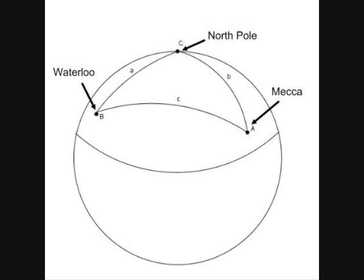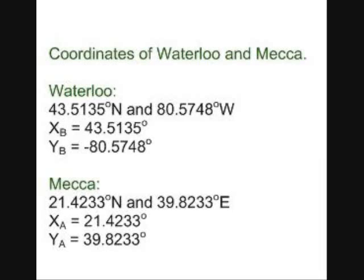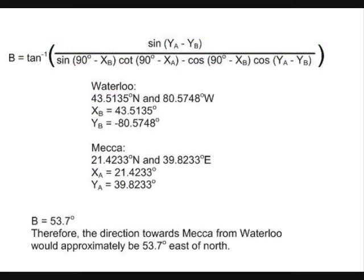Here are the coordinates of Waterloo and Mecca. By substituting these values in, we can determine that B is equal to 53.7 degrees. Therefore, the direction from Waterloo to Mecca would be approximately 53.7 degrees east of North. We have thus determined a formula that one could use to determine the direction to the Kaaba mathematically.